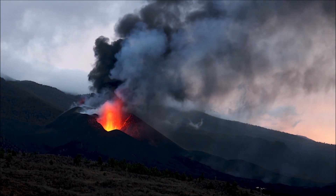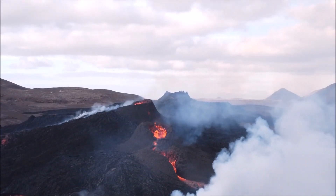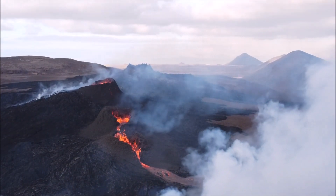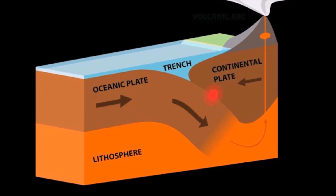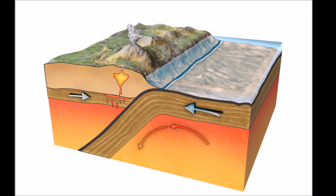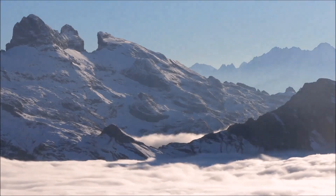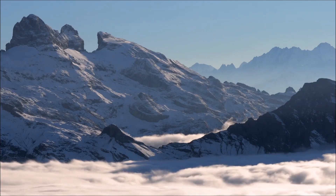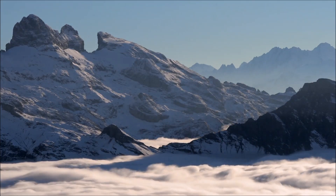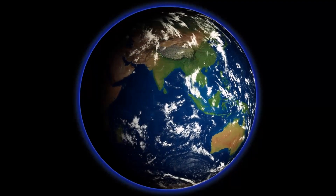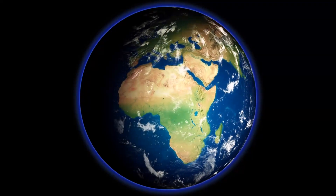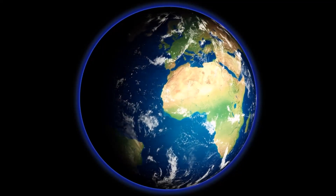Plate tectonics is an essential process demonstrating that Earth has a dynamic structure and that the crust is constantly changing. This process involves the brittle outer layer of the Earth, known as the lithosphere, being divided into large pieces that float on the mantle below. Boundaries where two plates move apart are called divergent boundaries, while boundaries where two plates move towards each other are called convergent boundaries. These plate movements can trigger various geological events such as earthquakes, mountain formation, and magmatic activity. Plate tectonics is crucial for understanding the dynamic nature of our planet and forms the basis of the geological evolution of the Earth's crust from its formation to the present day.